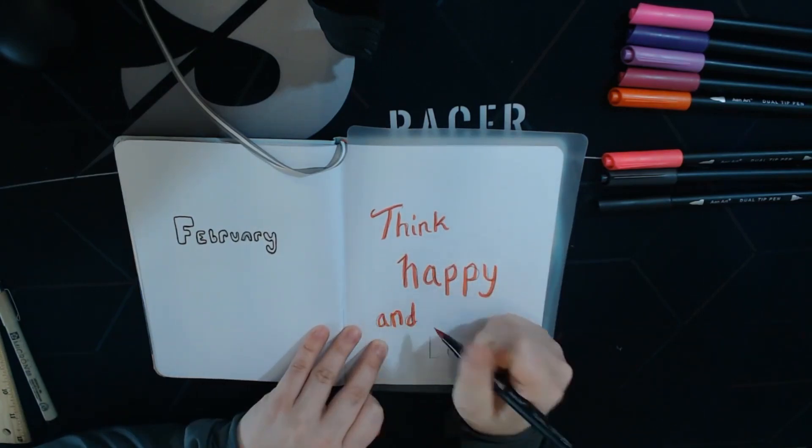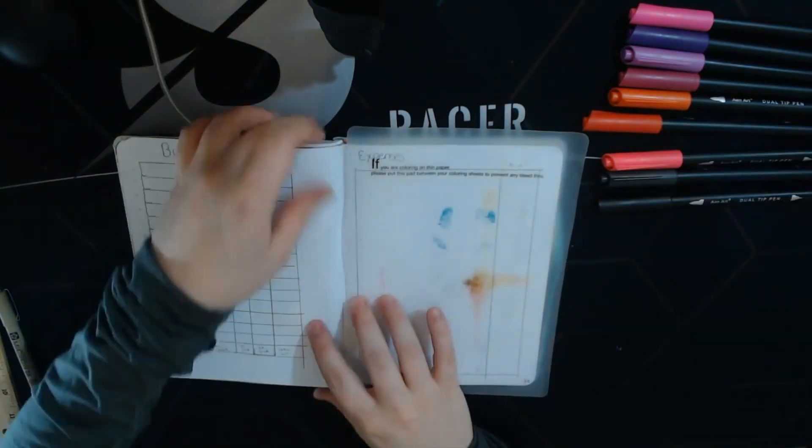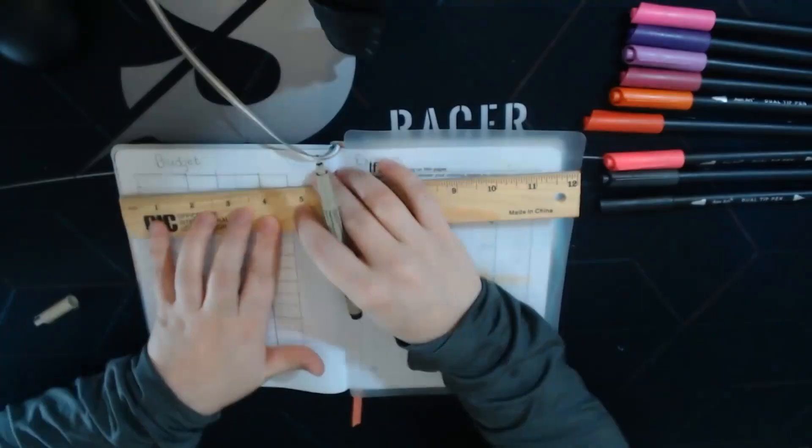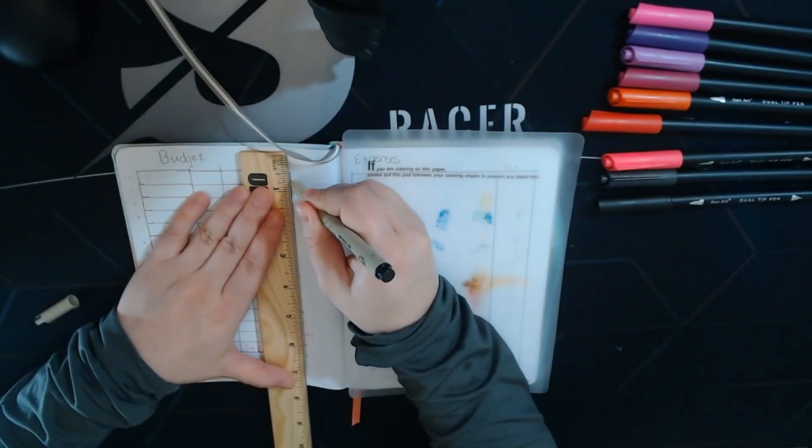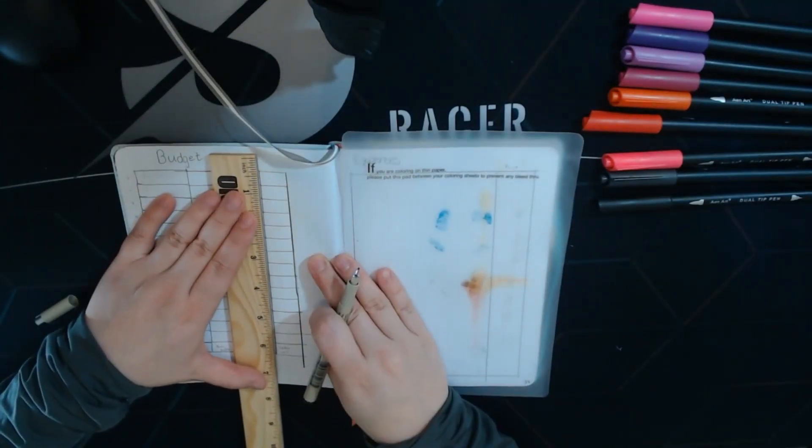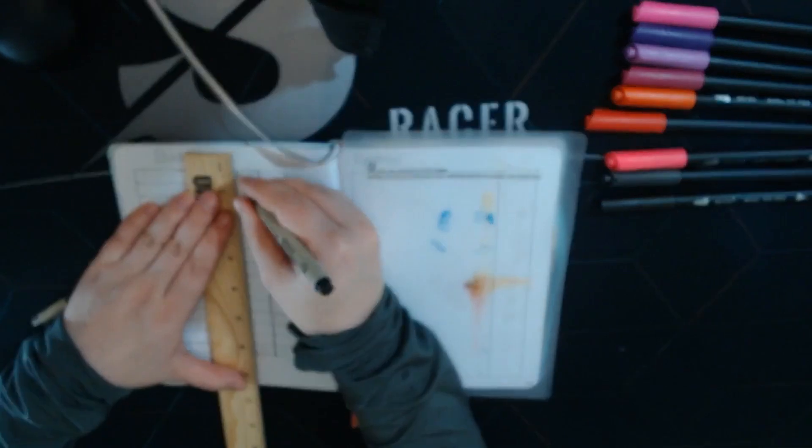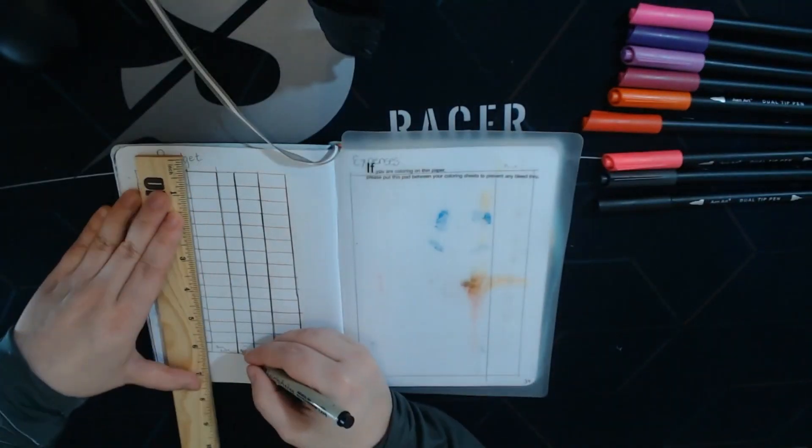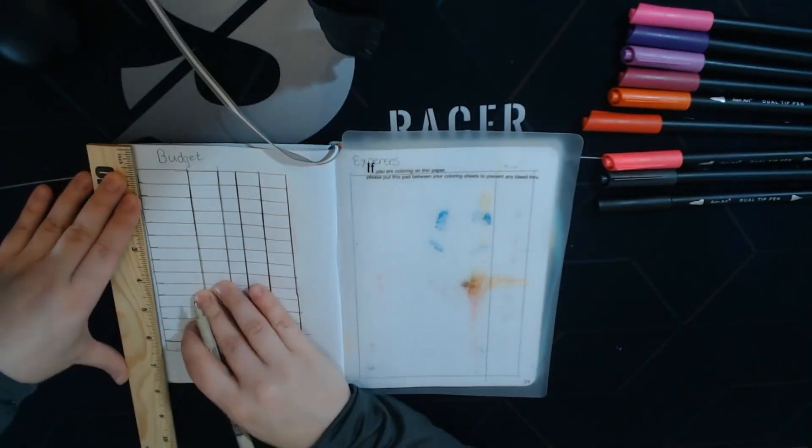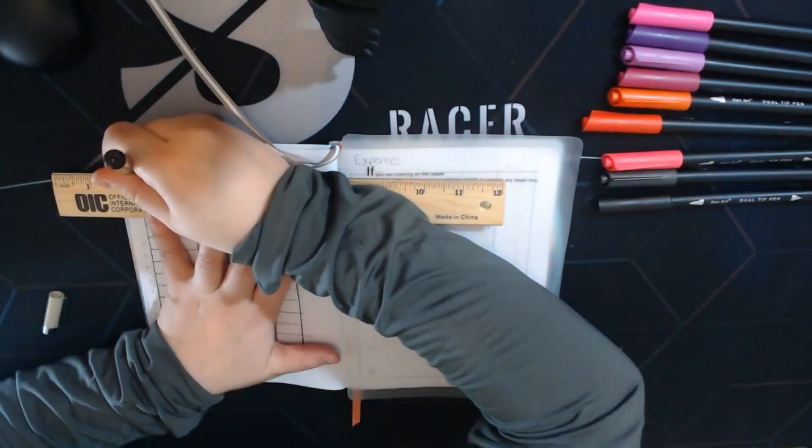So the quote for February was think happy and love because I've been not so mentally great at being upbeat. So first page, budget. Because the first thing whenever you want to think happy and love is money. There's logic there, I swear.